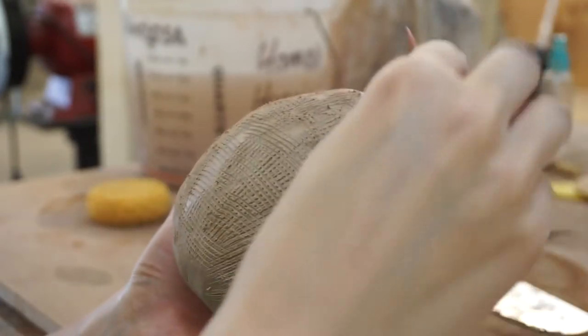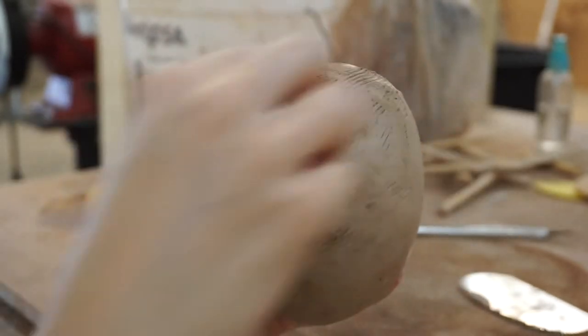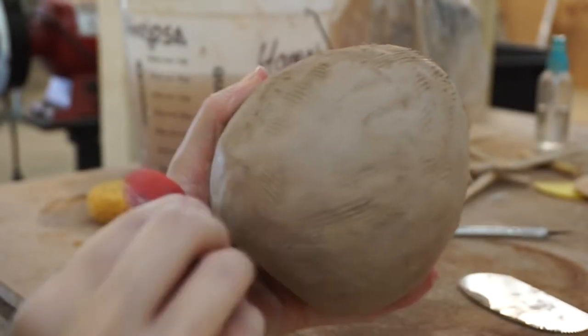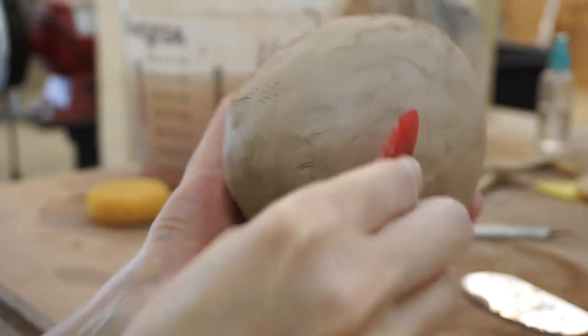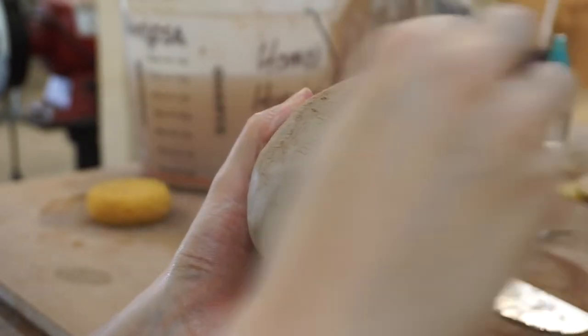Then take a smooth rib and you're able to move all that clay around more easily, fill in gaps as well as take off excess.